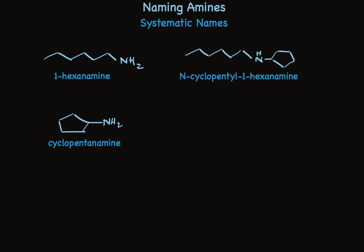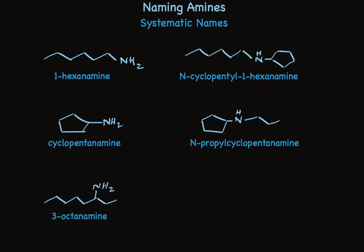Naming cyclopentylamine as a common name, I told you to call it cyclopentylamine, but using the systematic name we call it cyclopentanamine — drop the -e and replace it with -amine, all one word. If there's a substituent on the nitrogen, simply name it and put a capital N in front. The amino group can be at a position other than the first carbon — no problem, just name that carbon. So this is 3-octanamine, and if there's another group on the nitrogen, it's N-ethyl-3-octanamine.